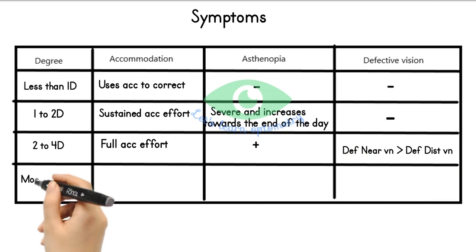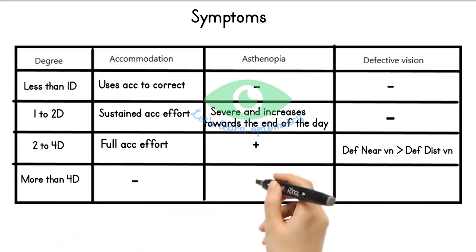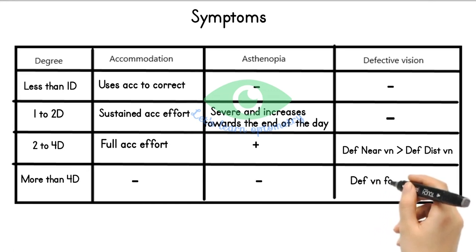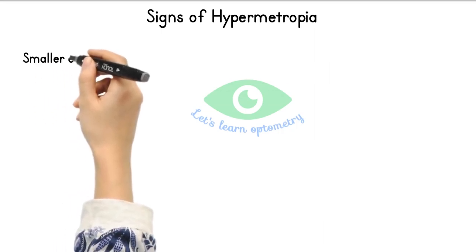With more than 4 diopters, these patients do not accommodate and will have blurred vision for both distance and near with no asthenopia. Signs: eyeball may appear smaller as a whole.